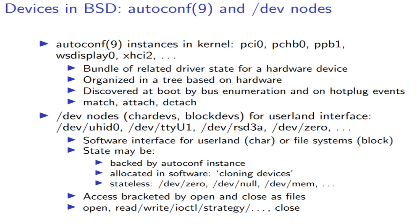The state may be backed by an autoconf instance — in the case of a USB human interface device, there will be an autoconf instance with the USB device driver. It might be allocated in software, like the audio device in NetBSD which lets the kernel do mixing so multiple processes can use the same physical audio devices. Or it might be stateless, like /dev/zero or /dev/null — just software abstractions with no physical device backing them.